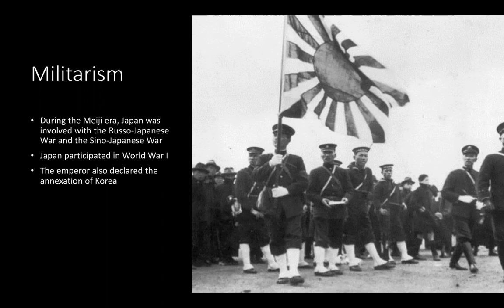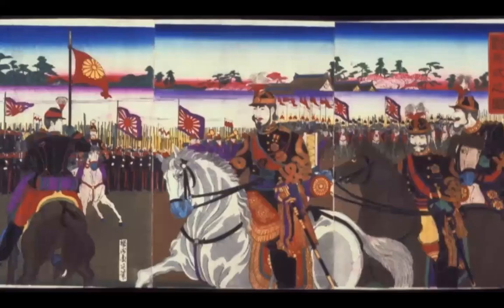Korea was annexed during this time, and Japan would maintain its control over Korea until the end of World War II. You can see the new style of Japanese military — this imperialist force with the imperial flag of Japan — and a woodblock print depicting Japanese forces, again with the imperial flag, showing the strong military power that was really a focus during the Meiji era.